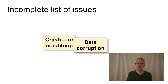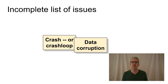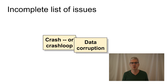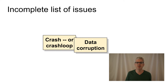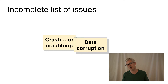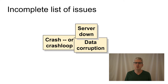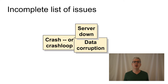Data corruption: you get bad data appearing where you least expect it. You read something from disk and it's actually incorrect. Even worse, you read it from disk, it's incorrect, but it looks plausibly correct. You go to talk to a server or service that you depend on, and it's just not there. It's gone.